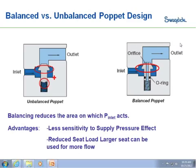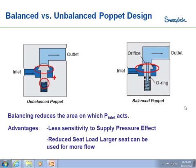Balancing the poppet reduces the area on which our inlet pressure forces can work. It makes the regulator less sensitive to supply pressure effect, but also gives us the advantage that we can use a larger seat on the regulator to allow more flow through the product than we would with an unbalanced poppet design.